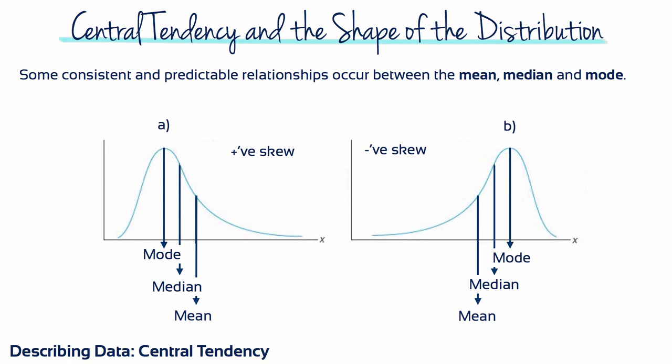Distributions are not always symmetrical. Quite often they're lopsided or skewed. In positively skewed distributions, the order of the three measures of central tendency, from smallest to largest, is the mode, then the median, then the mean.